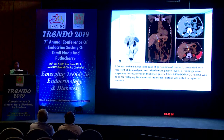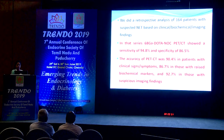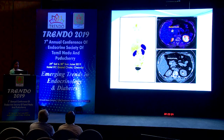For suspected NETs — patients with clinical, histopathological, or biochemical suspicion but no confirmed diagnosis even after OGD scope or conventional imaging — DOTA PET-CT has high sensitivity and specificity. A retrospective analysis of 164 patients showed 90% accuracy with clinical signs and symptoms, and 86% accuracy with raised biochemical markers. One case showed a small focus of uptake in the duodenum, confirmed as carcinoid after biopsy.